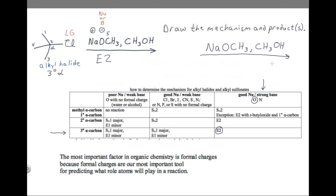Notice how important it was that we found the ionic bond and put in the formal charges. If we hadn't realized that this was an ionic bond and hadn't drawn in the formal charges, it would have seemed like we were dealing with a neutral oxygen. Neutral oxygen is in a completely different column of the table and would predict completely different mechanisms. Make sure that you identify the ionic bonds so you can find the formal charges, because formal charges are one of your most important tools for figuring out what will happen in a reaction.